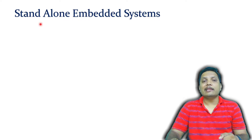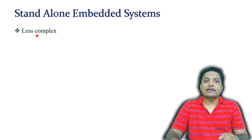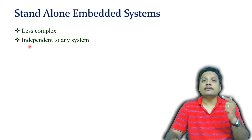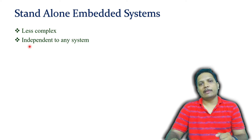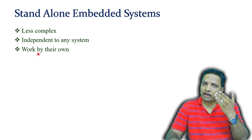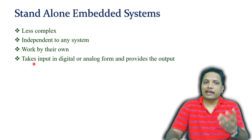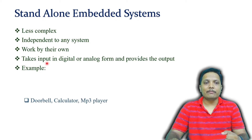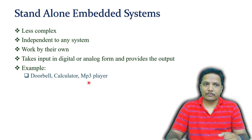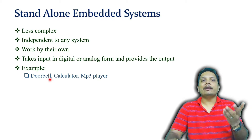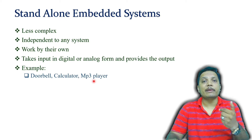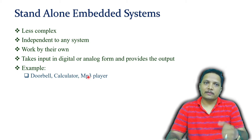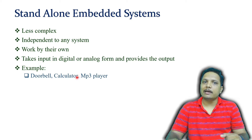A standalone embedded system is less complex and independent — it does not depend on any external system. It works on its own with no dependency. It takes input in analog and digital form and provides output. Examples include a doorbell, calculator, or MP3 player, none of which depend on any external system.